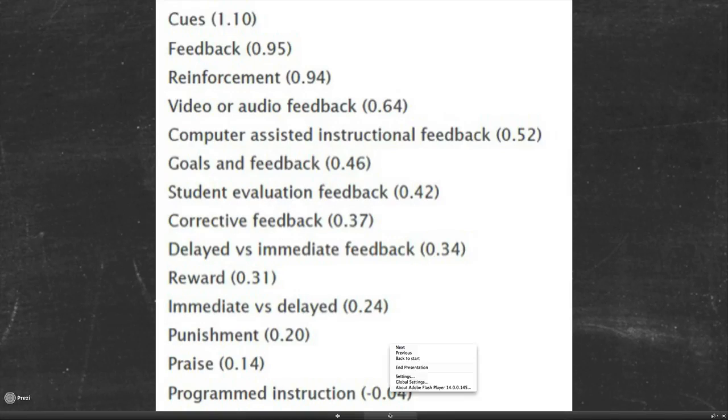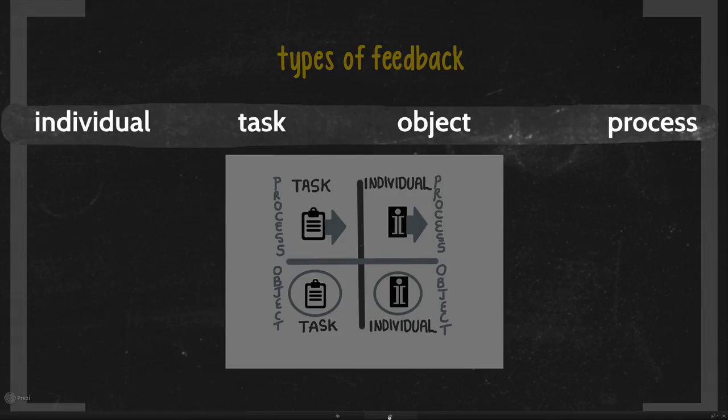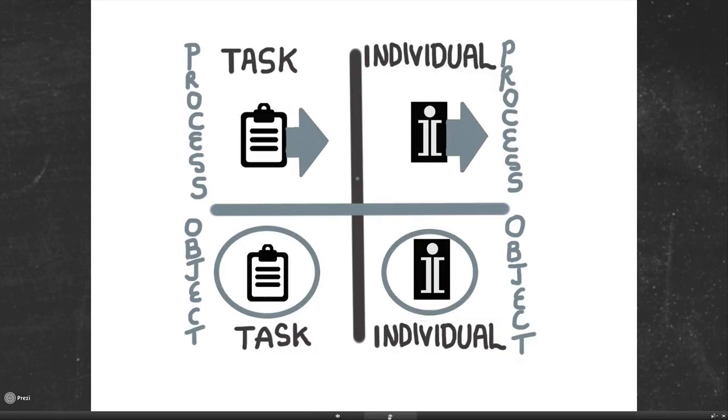In order to make this clear, take a look at the matrix which I've put together which tries to work with four different variables. On the one side with feedback, you can focus on the individual or you could focus on the task. You could focus on the task as an object in terms of the fact that it's actually been done, there it is as an object which you evaluate in its full completion, or you could be involved in giving feedback to the process of actually getting the task done. What I would like to do is spend a little bit of time talking about the dynamics of these four.